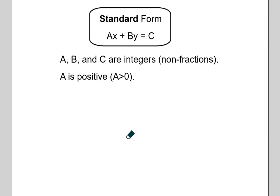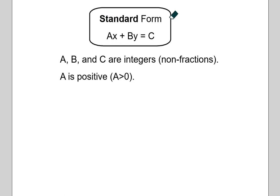Standard form is the last thing you need to know. Standard form is where all your X and Y terms are on the left side and only one regular number is on the right. Also, the lead coefficient should not be negative. I will say that in some exercises and textbooks a negative lead coefficient is accepted, but the most formal proper standard form would have a positive coefficient on X.